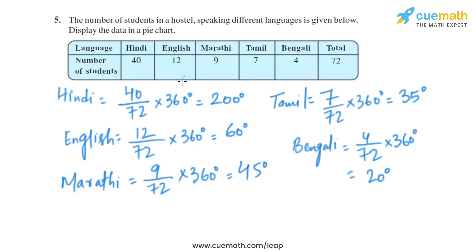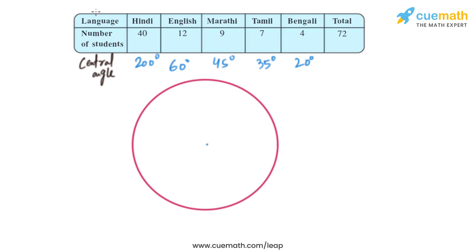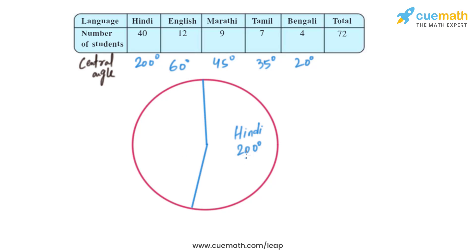Now we have the central angles for each language, so we can draw the pie chart. We will start by drawing 200 degrees for Hindi at the center of the circle. Using a protractor, we draw the 200-degree sector for Hindi.